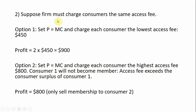Step two: suppose the firm must charge consumers the same access fee. Option one is to set price equal to marginal cost and charge each consumer the lowest access fee — in this case, consumer one's consumer surplus of $450. So we charge all consumers a $450 access fee, making no profit on the units sold. The firm's profit would be $900.